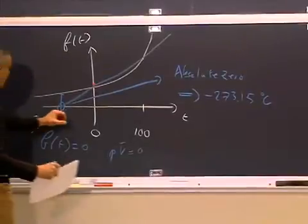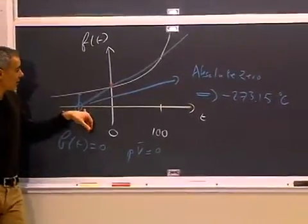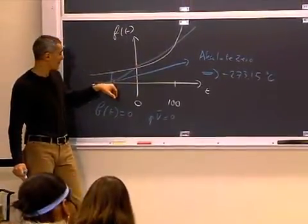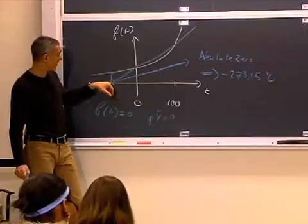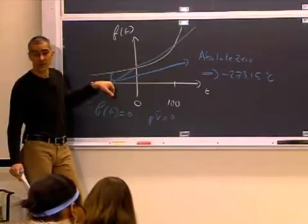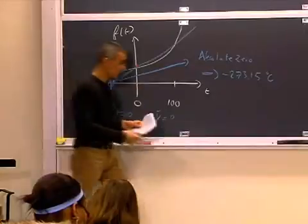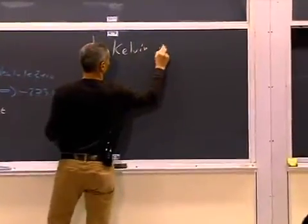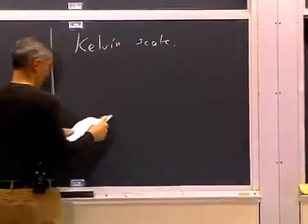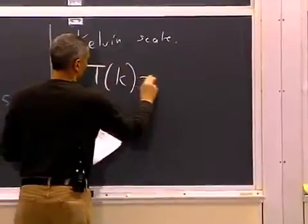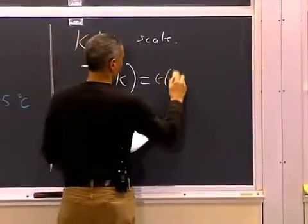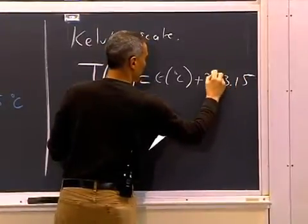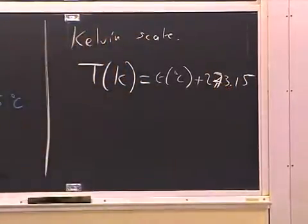And so that begs the notion of re-referencing our reference point, of changing our reference points. To change our reference point from this point here being zero, instead of this point here being zero. So redefining the temperature scale to the Kelvin scale, where T in degrees Kelvin is equal to T in degrees Celsius plus 273.15. And then you get the Kelvin scale.